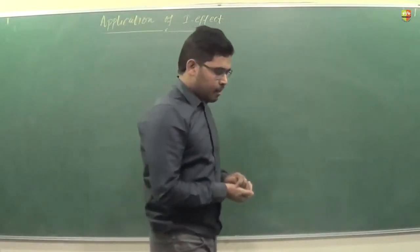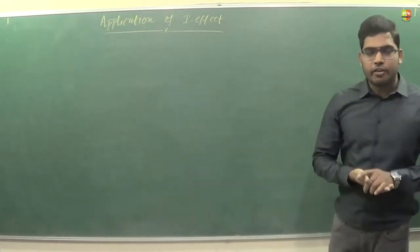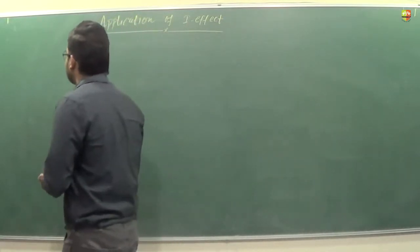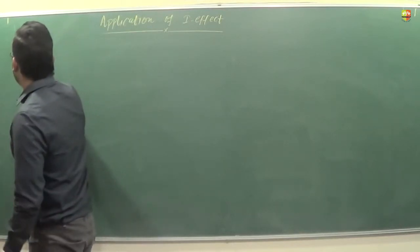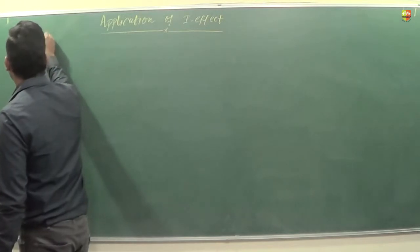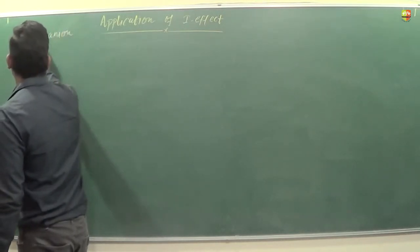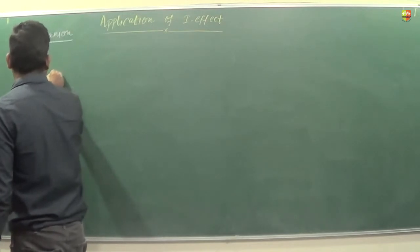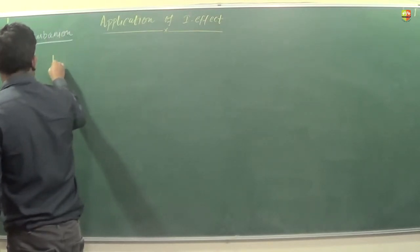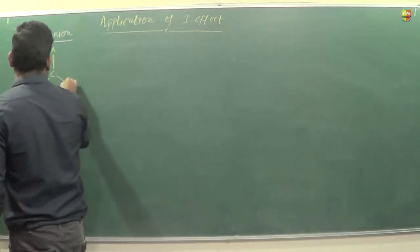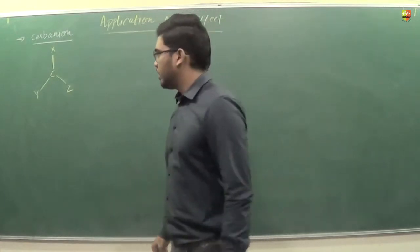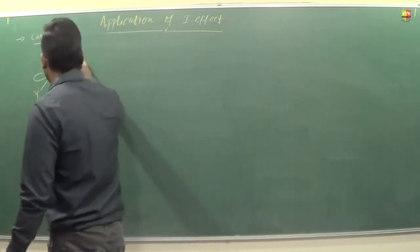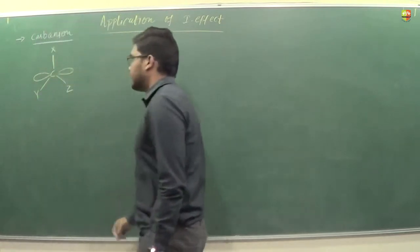So far we have discussed the stability of carbocation and free radical with respect to IFX. Now the third type of intermediate we have is the carbanion. In this, you see if the carbon atom — if I write down this structure with X, Y, and Z — it has one lone pair on it in this P orbital.